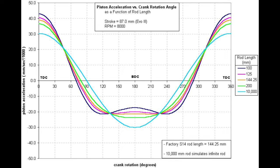If we can maximize the cylinder pressure acting on the piston during that narrow window, we will end up with peak torque, and for that given RPM range we'll end up with the maximum power.